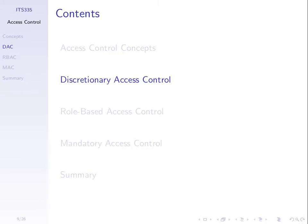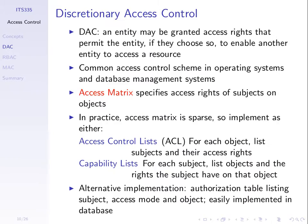In discretionary access control, entities are granted access rights, and the discretionary part is that we're allowed to modify these access rights. It's up to the discretion of the owner as to who can access or be permitted to access a particular resource. It's commonly used in operating systems and database management systems, though they can be extended to use the others we'll talk about.